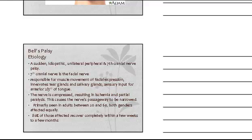Cranial nerve 7 innervates the tear glands and the salivary glands, and provides sensory input for the anterior two-thirds of the tongue. So you can distinguish that their muscle movement of facial expression will be affected, the tear glands — whether they tear too much or not at all — the salivary glands, the sensory input, and they may even have some affected taste for food.